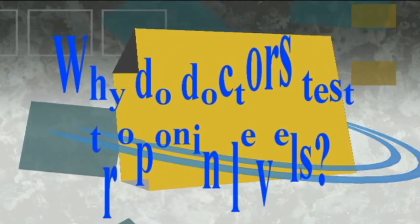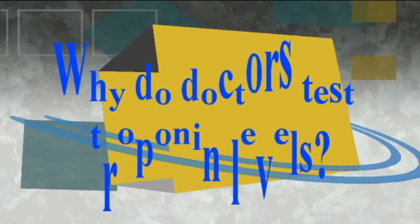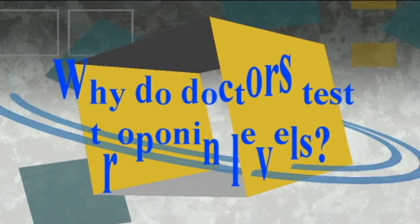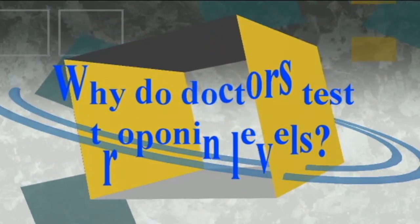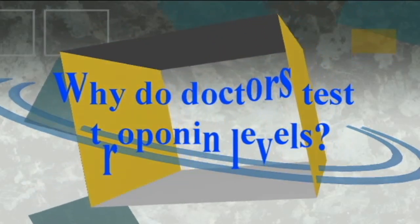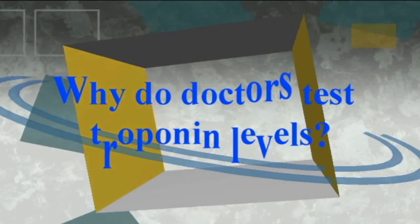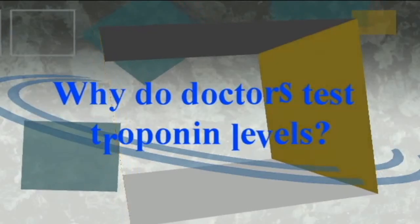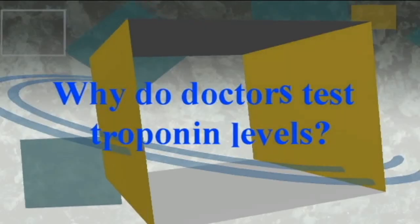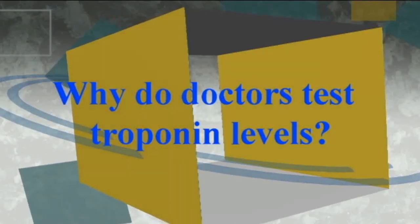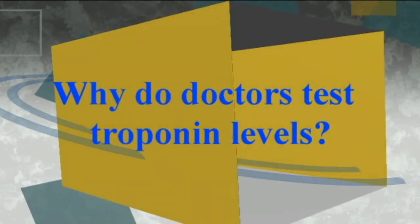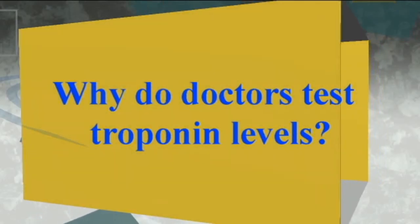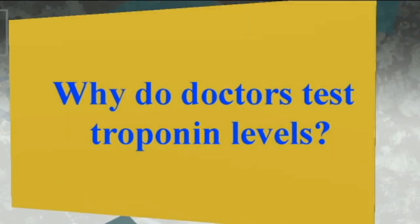So if the result is in this range, a doctor may check for other symptoms and order further tests before making a diagnosis. According to Lab Tests Online, many labs in the United States are now using a high sensitivity version of the troponin test, which the Food and Drug Administration FDA approved in 2017. This newer test can detect elevated troponin levels earlier than previous versions. Doctors usually order a series of troponin tests to monitor how a person's levels are changing over time.